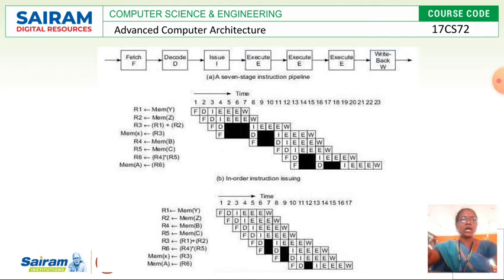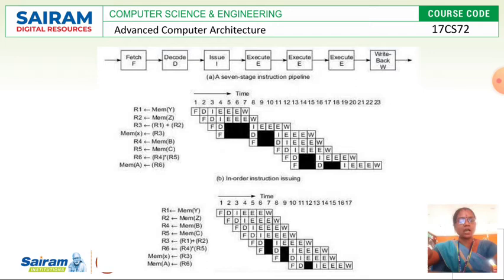This is what happens in the seven-stage instruction pipeline. In the middle diagram, a list of instructions is given, and how the pipelining stages are carried out is shown accordingly. The first instruction is R1 equals memory of Y — meaning the value stored in the Y location of memory is going to be assigned to the R1 register, which is one of the registers available in the processor.